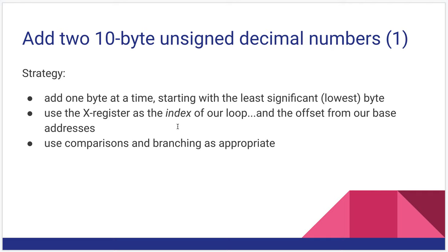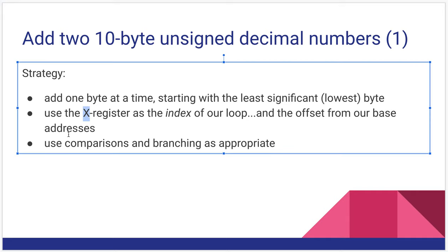So here's our strategy. We add one byte at a time, starting with the least significant byte. Going back to our address modes, we're going to use the X register as our index of our loop. So it's almost like saying if we have 4, I equals 0 to 10, X would be our I if we were thinking of it in Java terms. We're going to use that as index our loop, and it will add that to our base addresses to figure out which byte we're on. And then we'll use comparisons and branching as we need them.